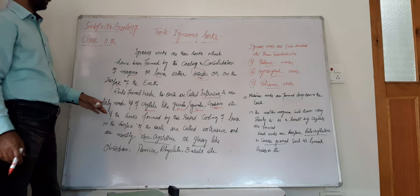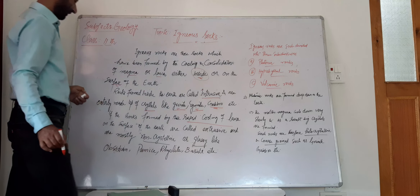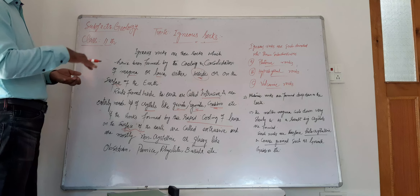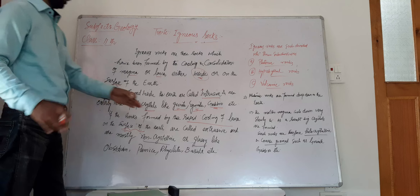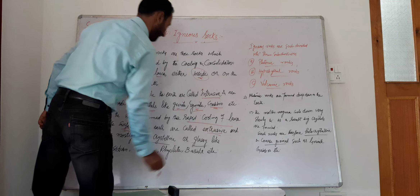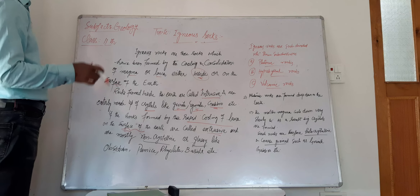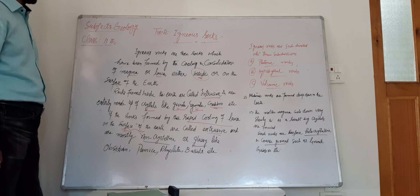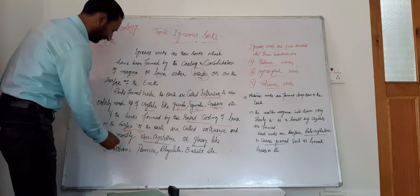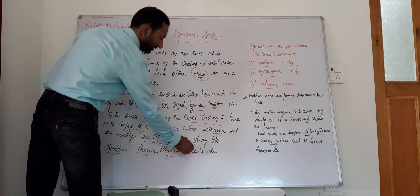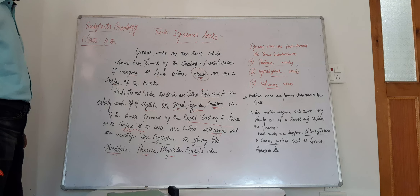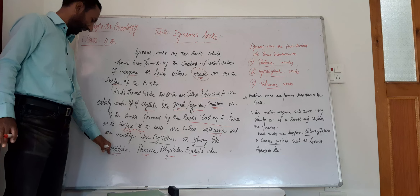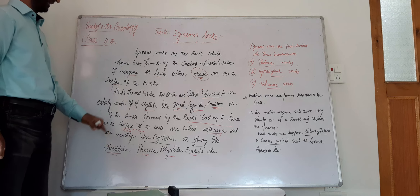If rocks are formed by rapid cooling of lava on the surface of the earth, those rocks are known as extrusive igneous rocks. These extrusive igneous rocks are mostly non-crystalline or glassy-like in structure. Examples include obsidian, pumice, rhyolite, and basalt.